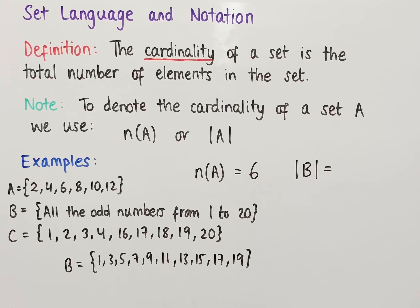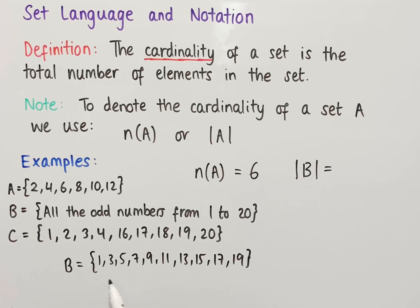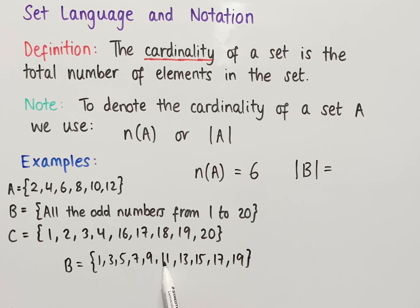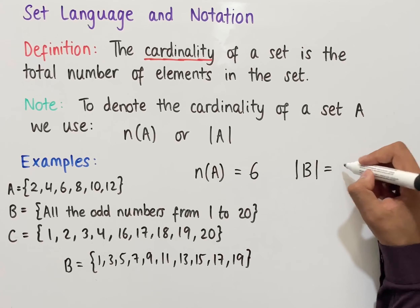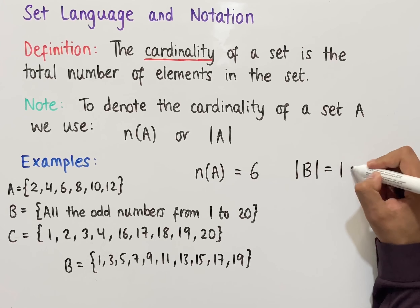These are all of the odd numbers from 1 to 20. In total, the number of elements in this set is 10, so the cardinality of B is equal to 10.